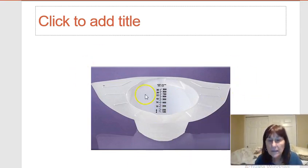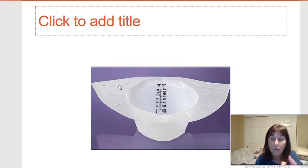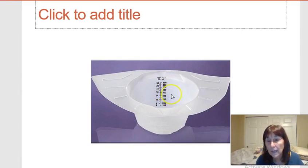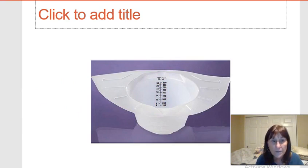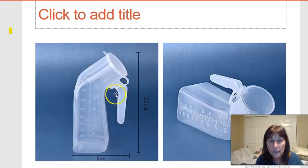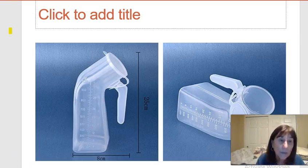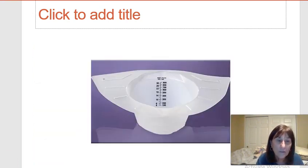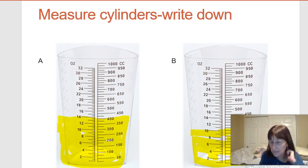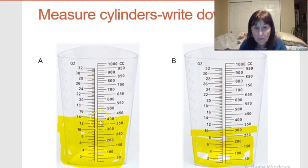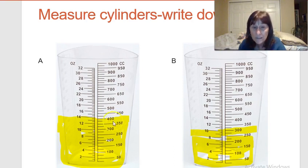To measure urine, a device called a 'hat' is placed in the toilet under the lid so the person can urinate into it. It has measurements in cc's/milliliters on one side and ounces on the other. Males can use a urinal and females a bedpan if needed. Then pour into a graduated cylinder to measure — for example, 400 cc's of urine.